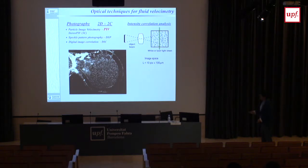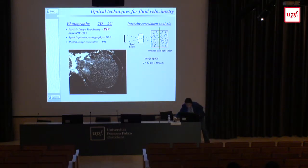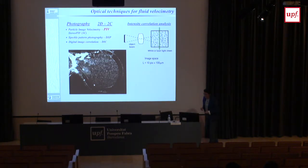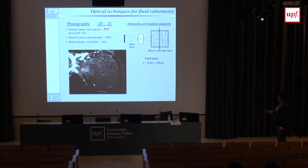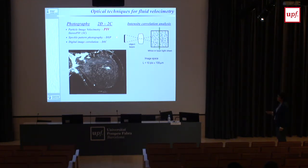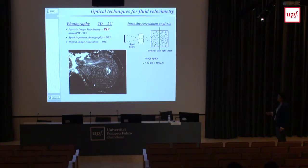The basic technique using photography is called Particle Image Velocimetry (PIV). When applied to solid mechanics it is called speckle pattern photography or digital image correlation. Speckle refers to the dot pattern seen when illuminating with a laser — any surface illuminated with a laser never looks smooth, it always has these speckle dots.